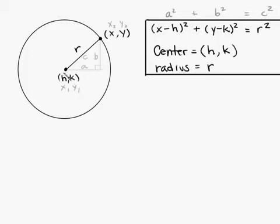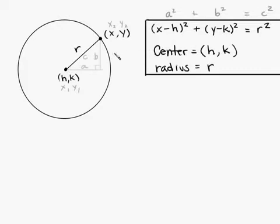Basically what's happening here is that the distance between x and h is shown here, and the distance between y and k is this distance here. So to figure out what the radius is, you're calculating the distance between h and x, which is x minus h, and between k and y, which is y minus k. When you square each quantity and add them, you get r squared.